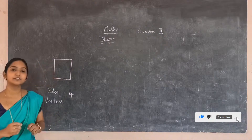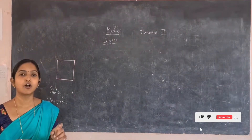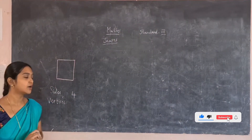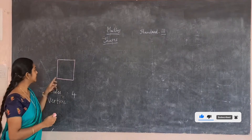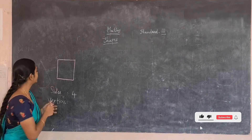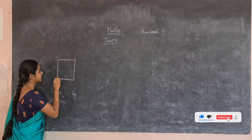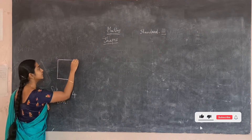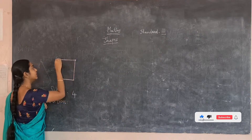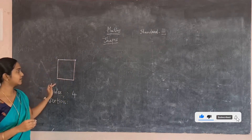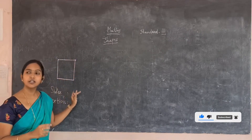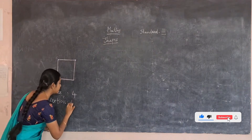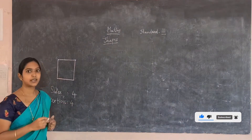Then what about the vertices? We call corners as the vertices. Now see how many corners are there: 1, 2, 3, 4. There are 4 corners. We call corners as the vertices, so there are 4 vertices for the square.